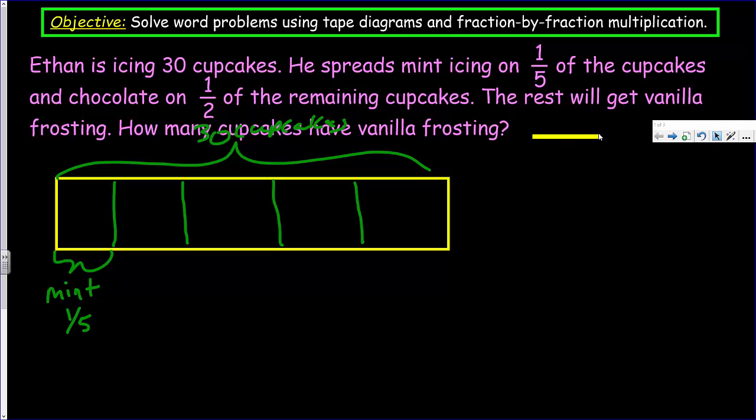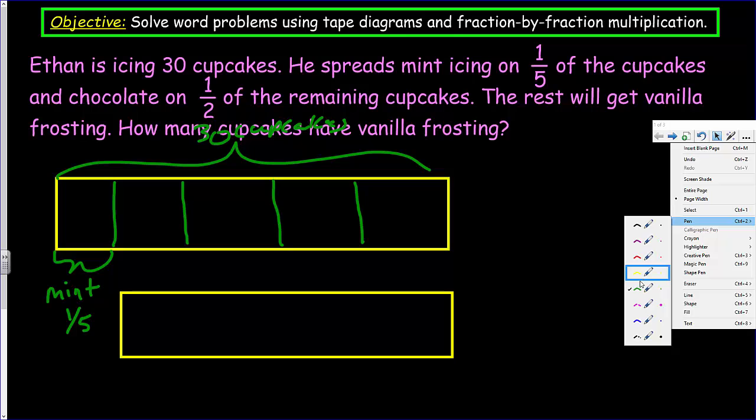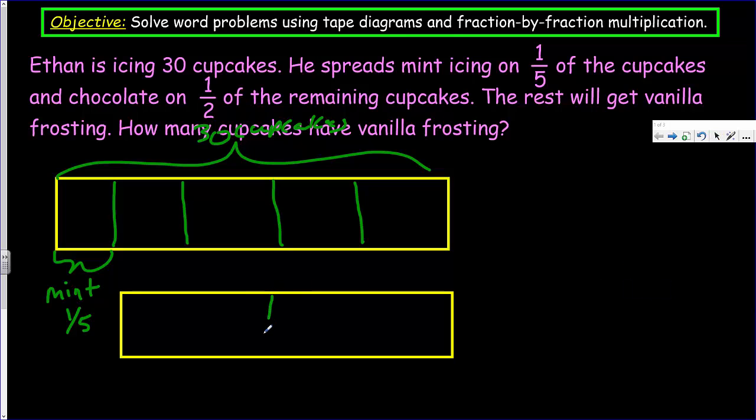Let's go ahead and let's put on, let's just make another tape diagram. This is showing the amount that's remaining. The one fifth, the mint icing, did say that one half of them, so let's go ahead and do the one half. So then one half of them are going to be chocolate.